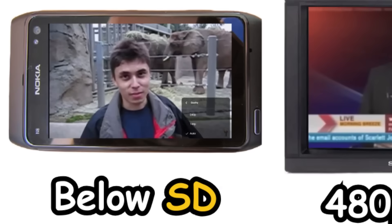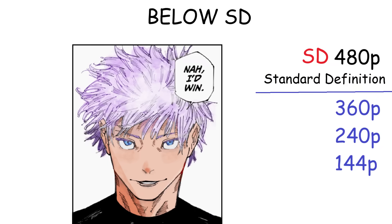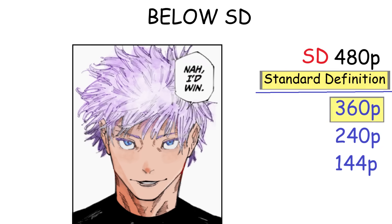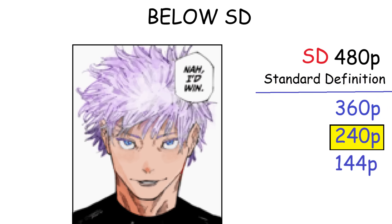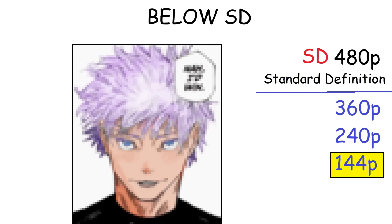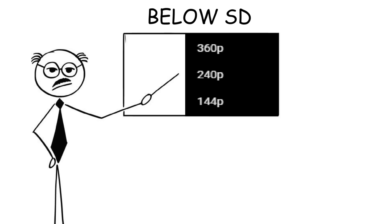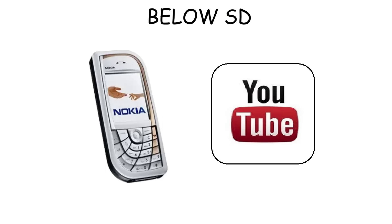Below SD, or standard definition, refers to every screen resolution that falls under 480p. It includes low resolutions such as 144, 240, and 360p, and was common in the early era of digital video and online platforms.